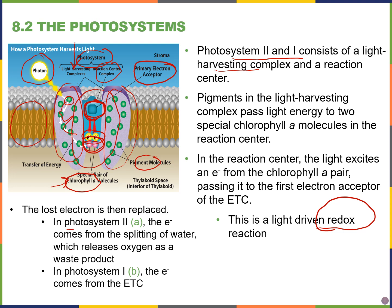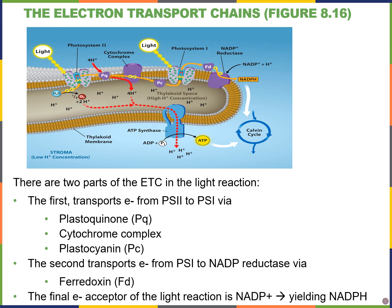We have to replace those lost electrons from chlorophyll a, and in photosystem 2 this happens from water. The reason we need water as a reactant in photosynthesis is to replace those missing electrons, and oxygen is produced as a result of this reaction. If this were photosystem 1, electrons would come from the electron transport chain instead.